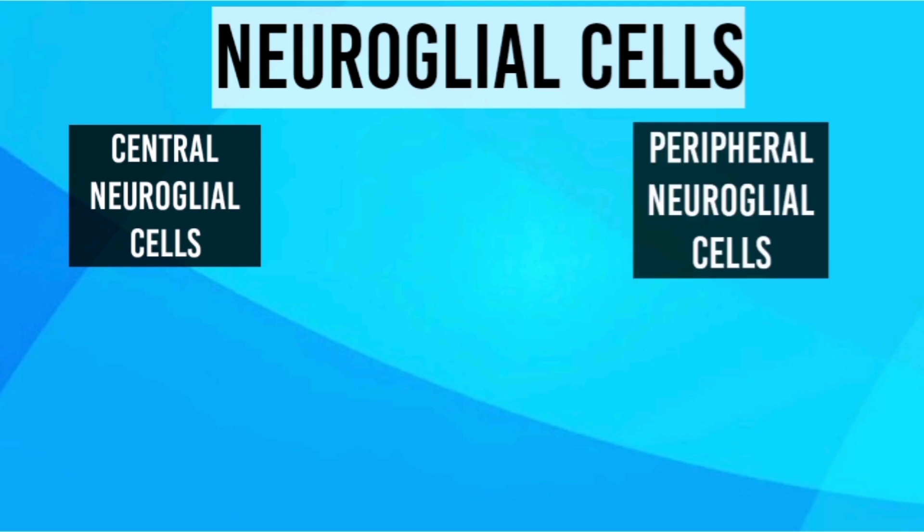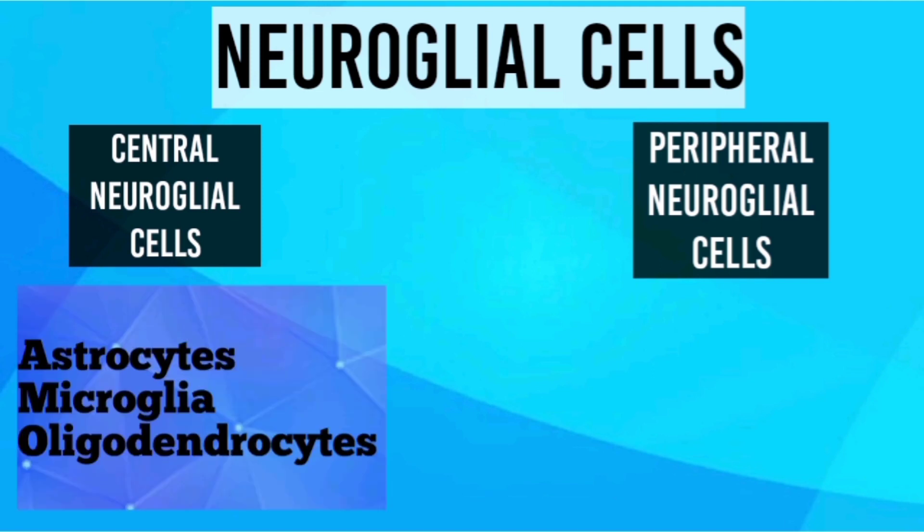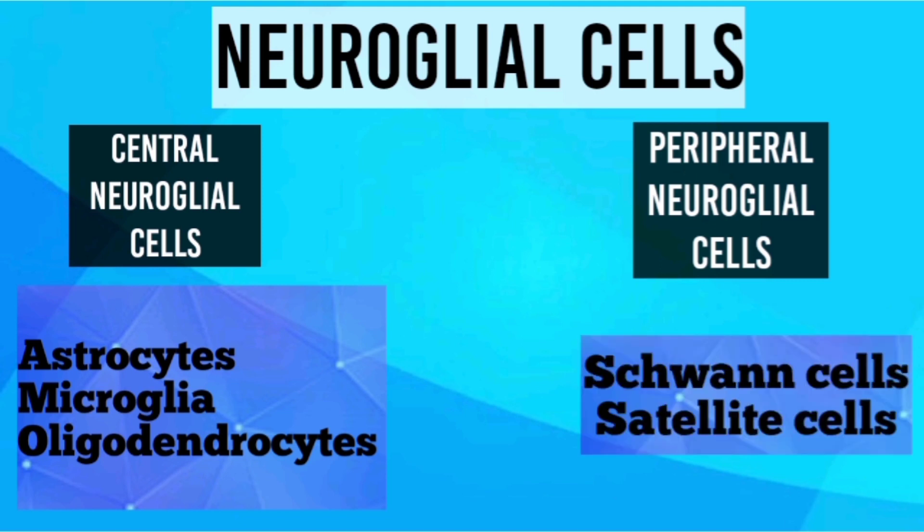Central neuroglial cells are astrocytes, microglia, and oligodendrocytes, whereas peripheral neuroglial cells are Schwann cells and satellite cells.